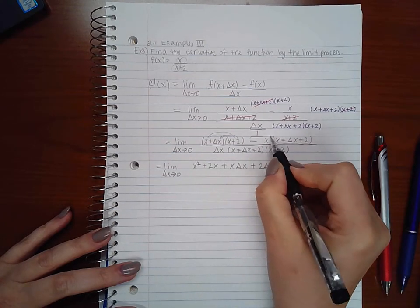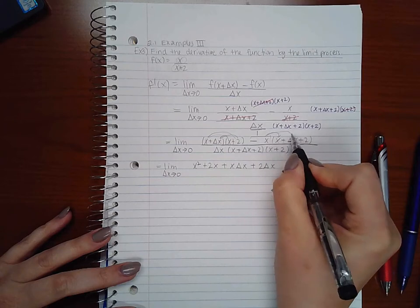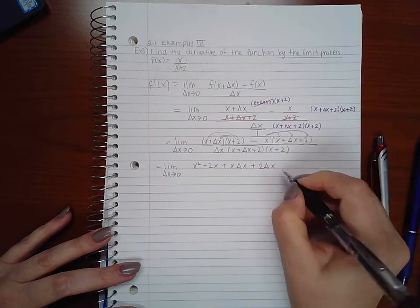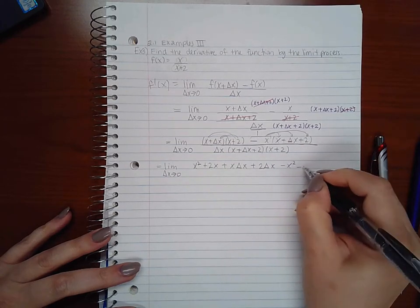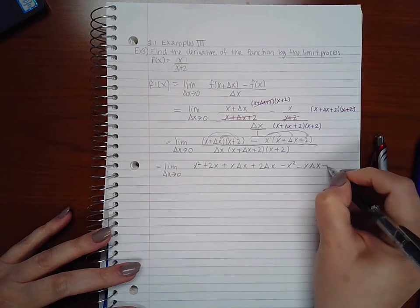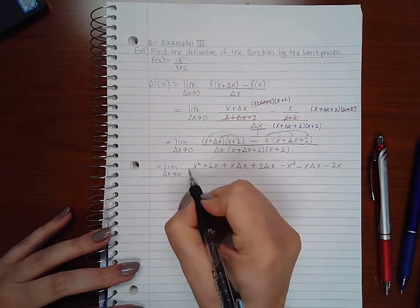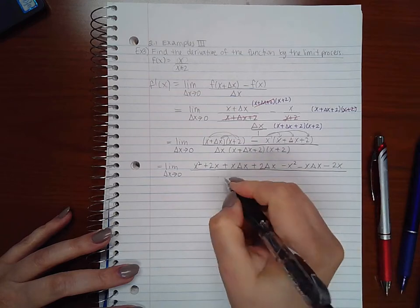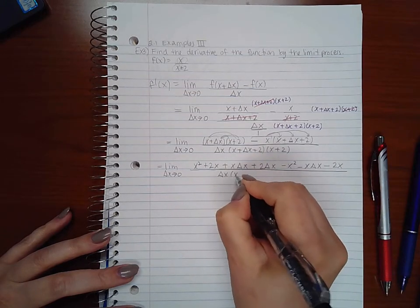Here I'm going to take this negative x and distribute it. So I get negative x squared, negative x delta x, negative 2x, all over my denominator which I am not going to expand.